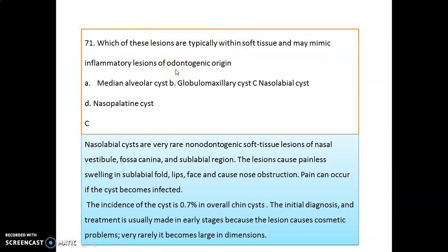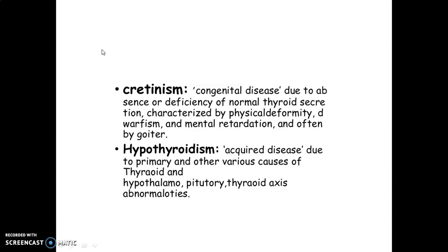Which lesion is typically within soft tissue and may mimic inflammatory lesion of odontogenic origin? That is the nasolabial cyst — a rare non-odontogenic soft tissue lesion of the nasal vestibule, floor of nose at the canine region, and sub-labial region. There is painless swelling in the sub-labial fold or on the face, possibly causing nasal obstruction. Pain occurs only when the cyst is infected. Incidence is about 0.7% and it is usually diagnosed early due to cosmetic concerns.